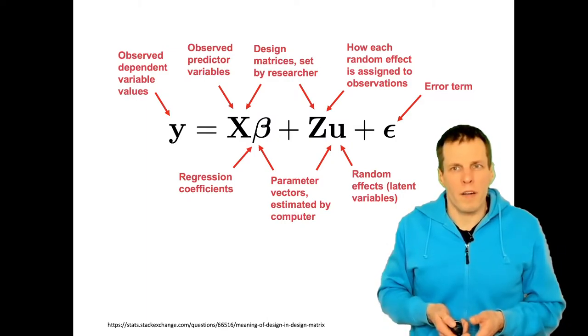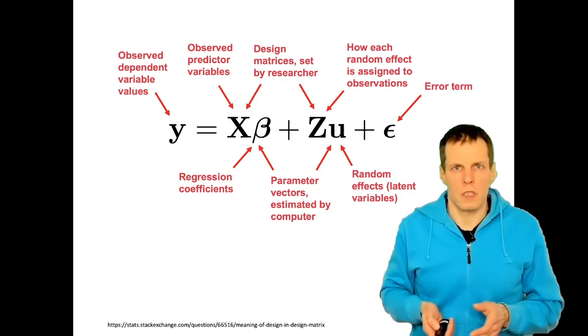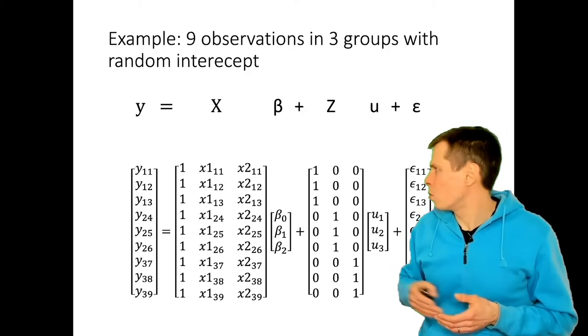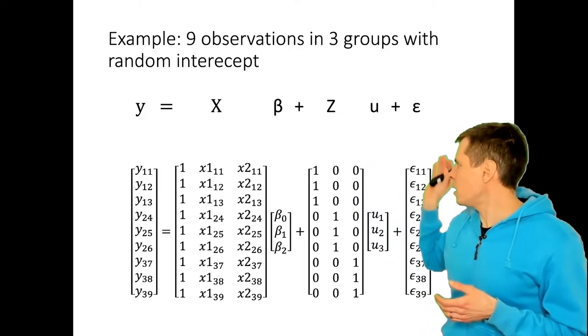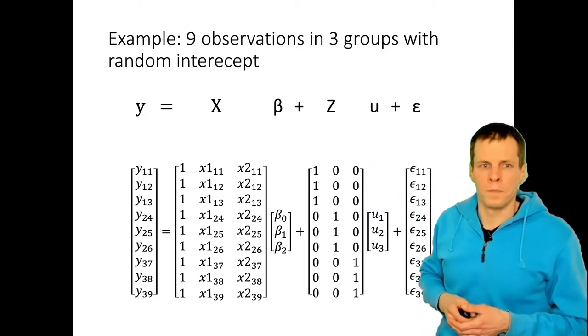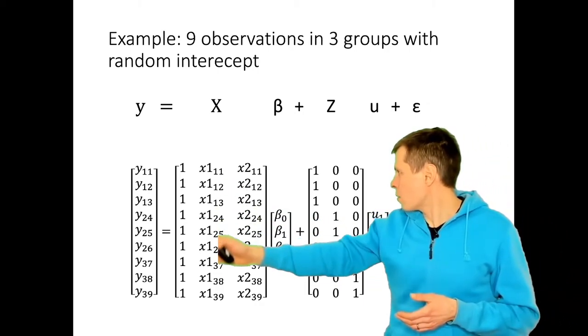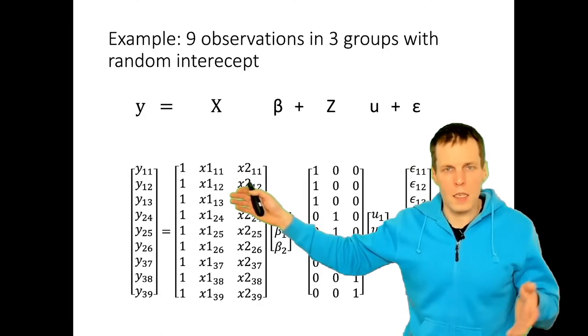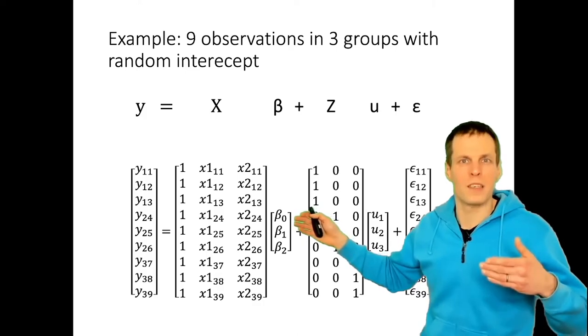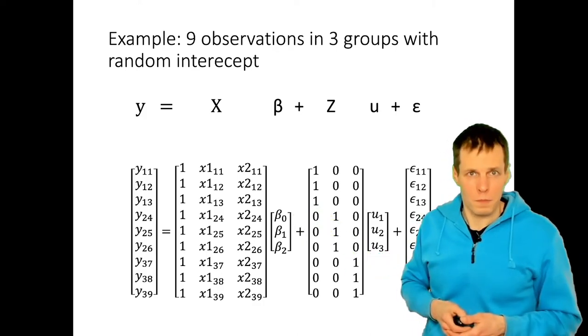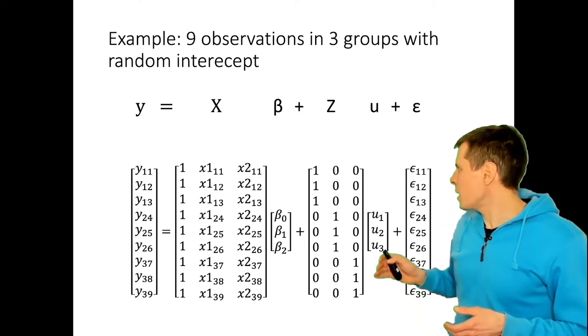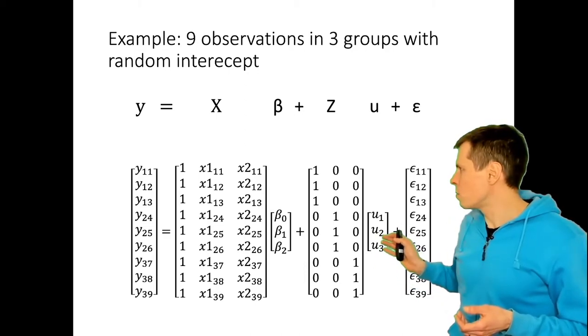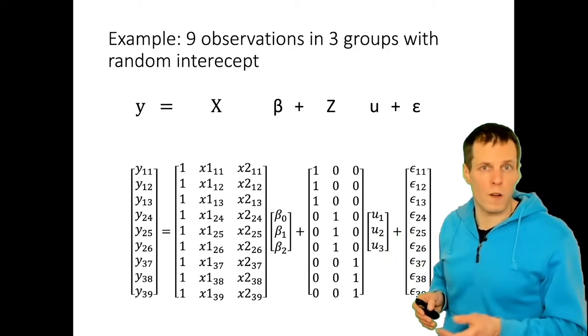Let's take a look at a numerical example to understand what goes into these matrices. In our example we have nine observations in three groups with random intercept. So y, X, β, Z, u, and ε are the matrices and vectors. We have the dependent variable values y's, we have the x's here, and we also have a column of ones, that is for multiplying the intercept. The intercept is multiplied by one before being added to the cases. And then we have this random intercept part. The intercepts are these u1, u2, and u3, three different values that are unobserved are allocated to the cases.